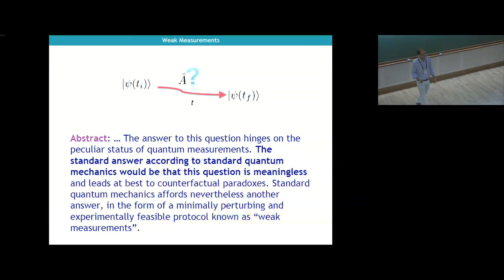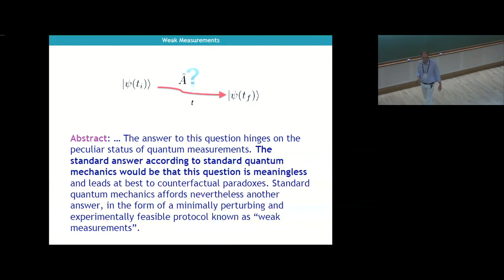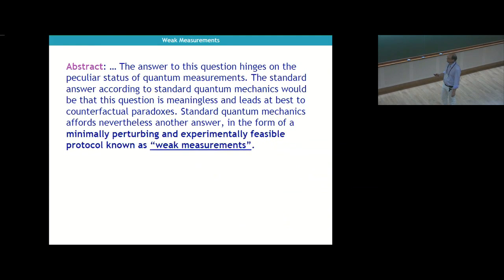Standard quantum mechanics tells you you can't do this, and the question is meaningless. This is due to the special status of measurements in quantum mechanics. The standard answer is that you would get counterfactual paradoxes if you try to say anything about the value of property A at some intermediate time. The whole idea behind weak measurements is that standard quantum mechanics gives you another answer: a sort of minimally perturbing, non-destructive measurement. That is what weak measurements are.